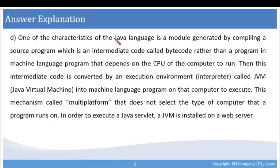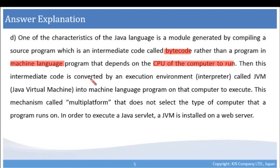Final answer d. One of the characteristics of the Java language is a module generated by compiling a source program, which is an intermediate code called bytecode, rather than compiling the program into a machine language program that depends on the CPU of the computer to run. So if we compile into machine language, we can only run on the CPU that our machine language is written for. However, what Java does, it will first convert it to bytecode. This intermediate code is then converted by an execution environment or an interpreter called JVM, Java Virtual Machine, into a machine language program on that computer to execute. This mechanism is called multi-platform, which does not select the type of computer that a program runs on.